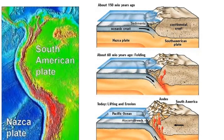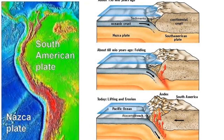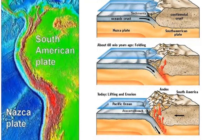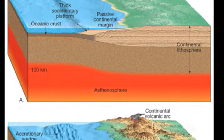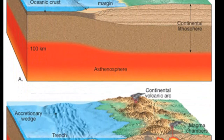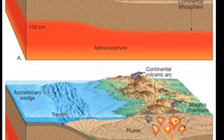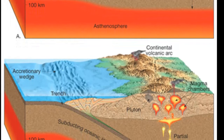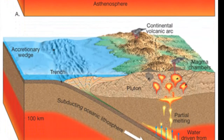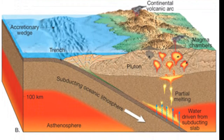How does a volcanic arc begin to build? As oceanic lithosphere descends into the mantle, increasing temperatures and pressures drive volatiles — mostly water — from the crustal rocks. These mobile fluids migrate upward into the wedge-shaped piece of mantle located between the subducting slab and the upper plate. Once the sinking slab reaches a depth of about 100 kilometers (60 miles), these water-rich fluids reduce the melting point of the hot mantle rock sufficiently to trigger some melting.